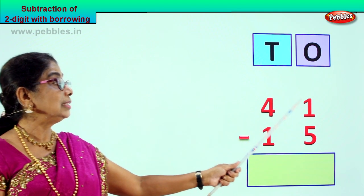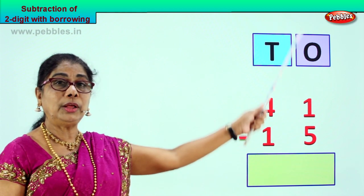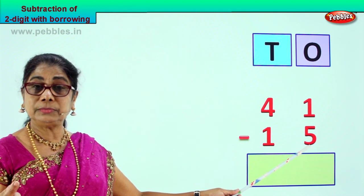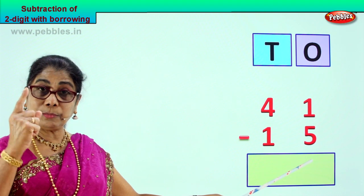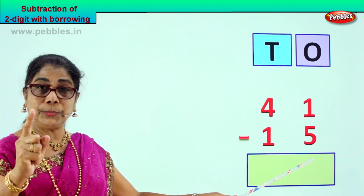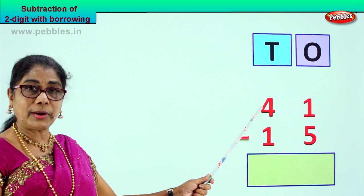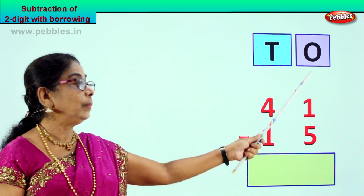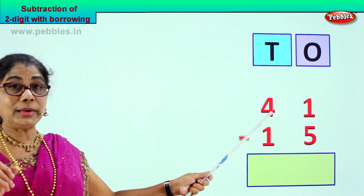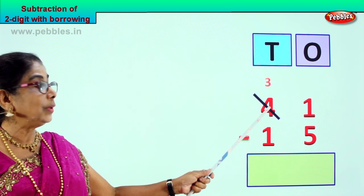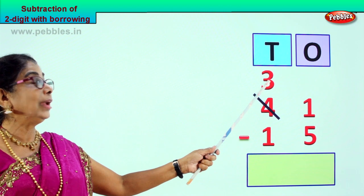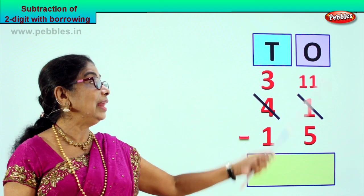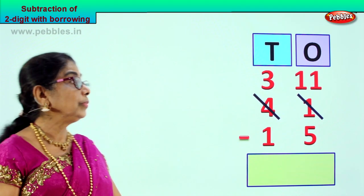Now you have 4 tens, 1 one, 1 ten, 5 ones. Look at the ones place — you have 1 here and 5 here. 1 is a small number. You cannot take away 5 from 1. So here we borrow 1 ten from the tens place and bring it to the ones place. 1 ten plus 1 will be 11. So we borrow 1 ten, cross this out. When you take away 1 ten from 4, you get 3. That 1 ten plus 1 is 11.